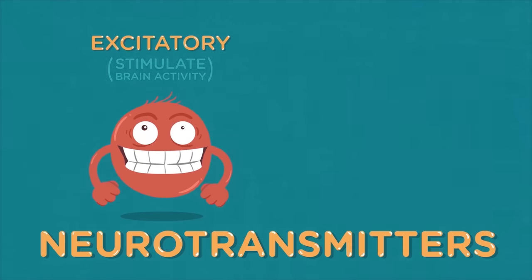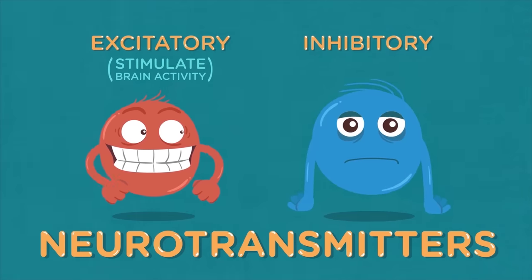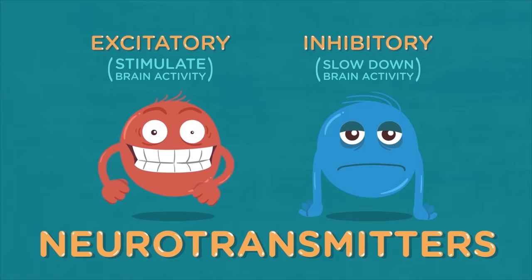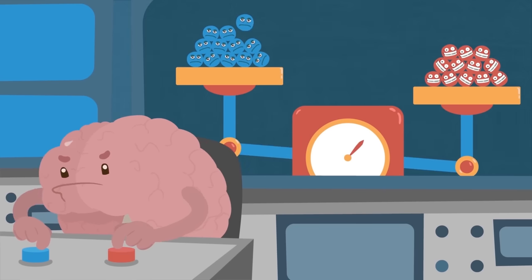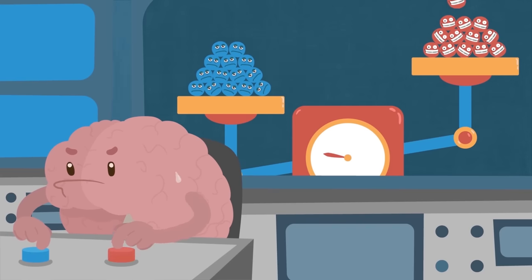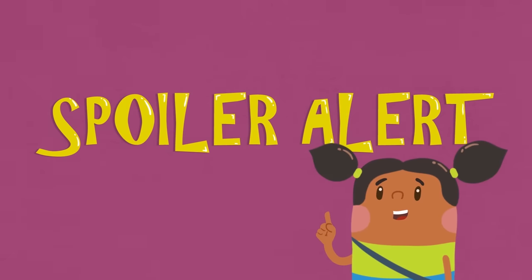Neurotransmitters can either be excitatory, meaning they stimulate brain activity, or inhibitory, meaning they slow down brain activity. To keep its operations going smoothly, the brain has to maintain a careful chemical balance between these two types of neurotransmitters.